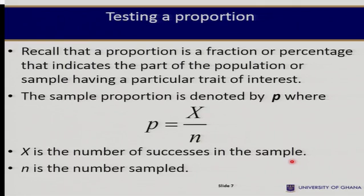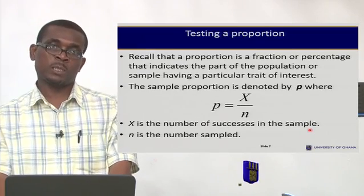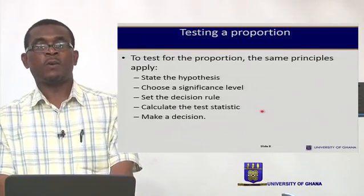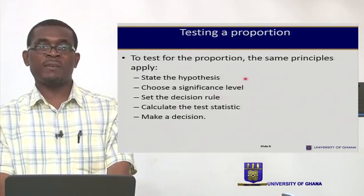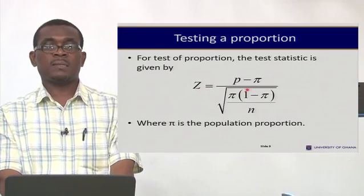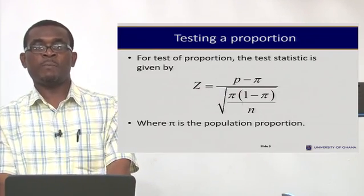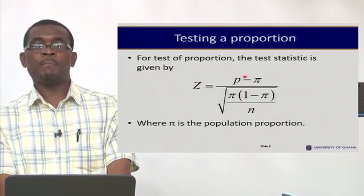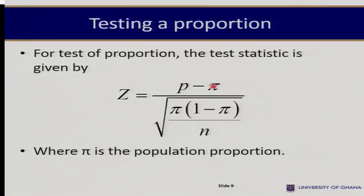We can test hypotheses concerning the population proportion using the same five steps: state the hypothesis, choose the significance level, set the decision rule, calculate the test statistic, and make a decision. The test statistic for the proportion is Z, calculated where P is the sample proportion, pi is the population proportion, and N is the sample size.